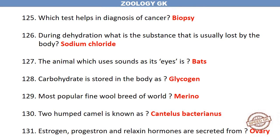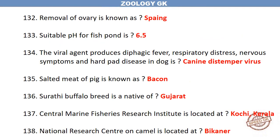Estrogen, progesterone and relaxin hormones are secreted from the ovary. Removal of the ovary is known as spaying. The suitable pH for a fish pond is 6.5. The viral agent that produces diphasic fever, respiratory distress, nervous symptoms and heart disease in dogs is canine distemper virus.